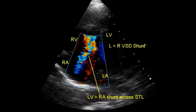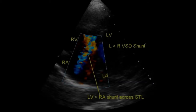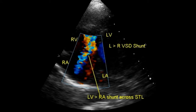LV-RA shunt can occur in three ways in VSD. One is the atrio-ventricular septum between the septal attachments of the mitral and tricuspid valve is defective. Two, perimembranous VSD with associated fenestration of the septal tricuspid leaflet, so that the VSD jet is partly directed from the LV across the interventricular septum through the tricuspid valve into the right atrium, as you see in this case. Three, ventricular septal defect with tricuspid regurgitation, so that the blood shunted from the LV is passing immediately into the right atrium to produce a step up in oximetry in the right atrium.